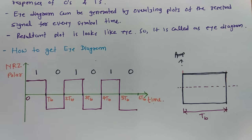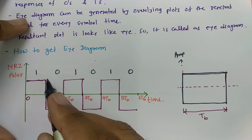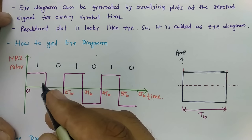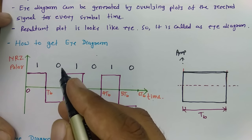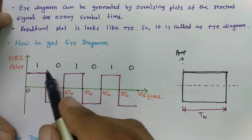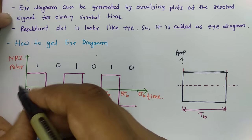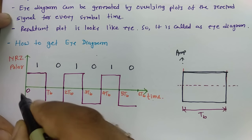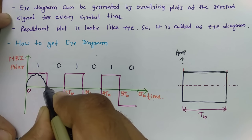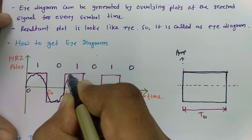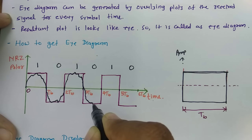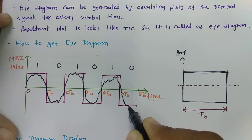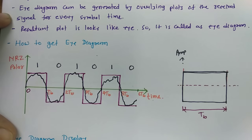If we look at a practical signal, it will not be the same as the ideal. When the signal is sent over a channel, because the channel is band-limited, some noise gets added to the original information. So the original signal will appear distorted. Let us consider a distorted signal received compared to the ideal signal — the distorted signal may appear like this.